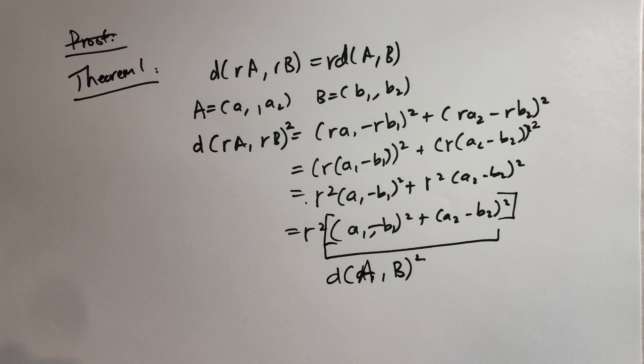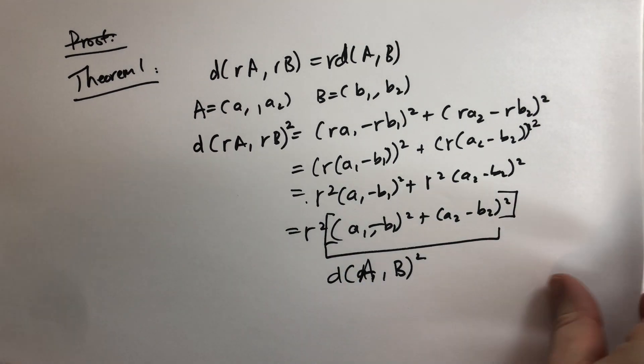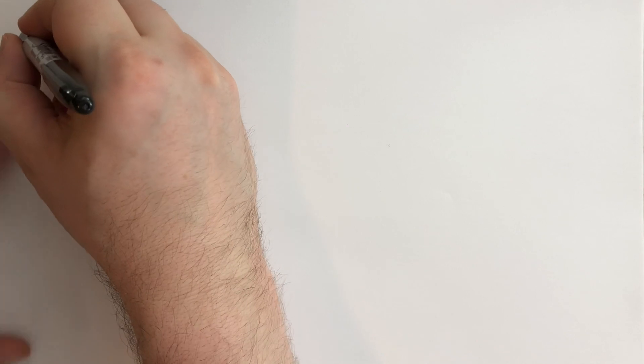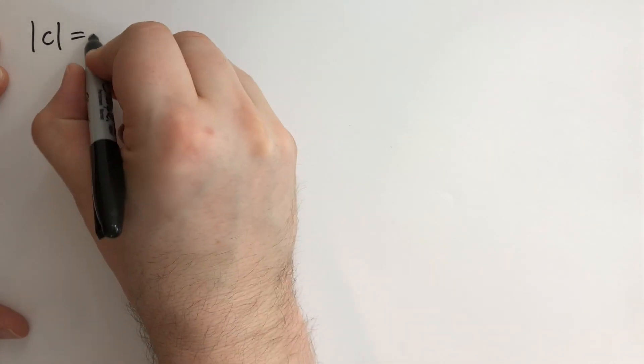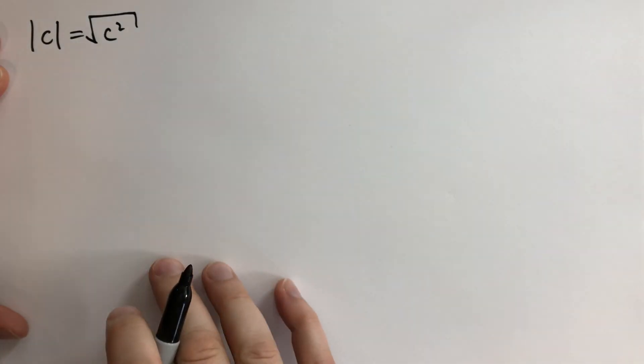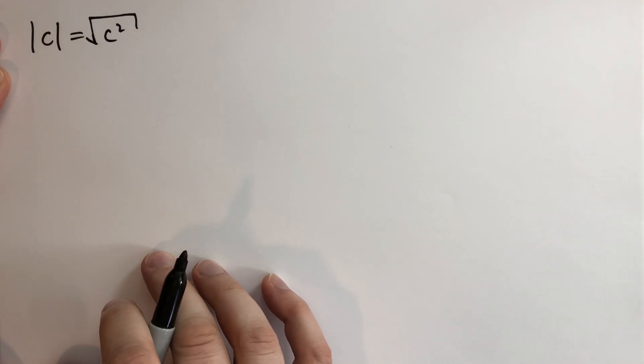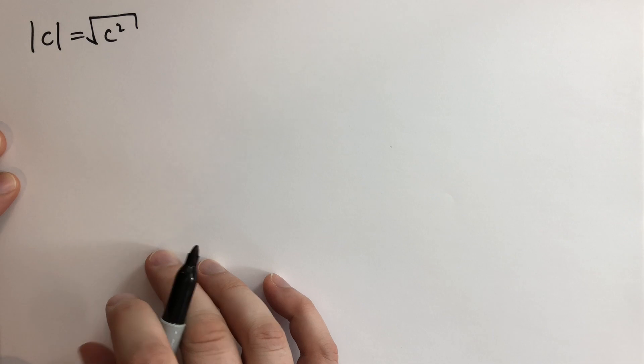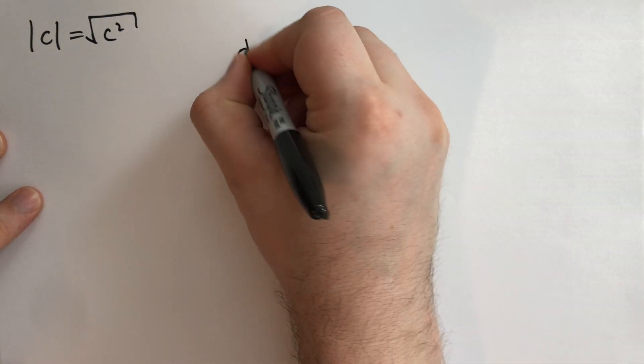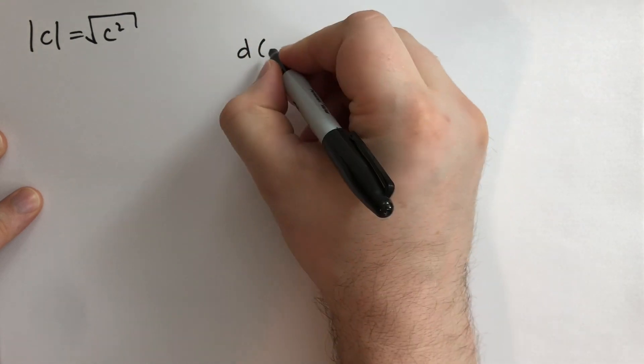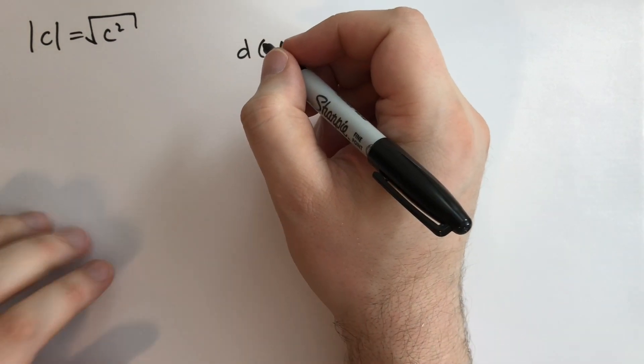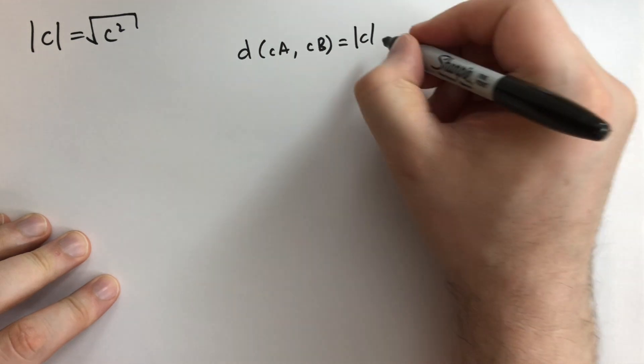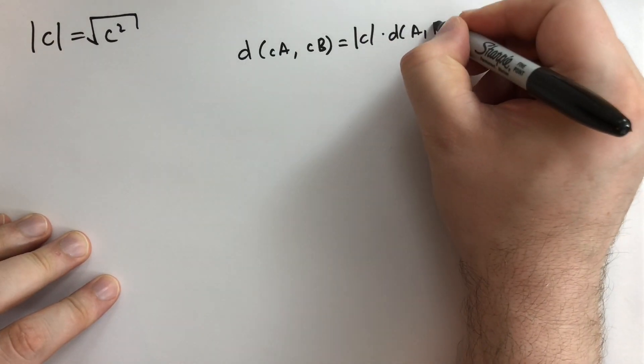What if we multiply by a negative number? So what if R is negative? So if we were to write out this, this is the absolute value of C. This is equal to the square root of C squared. It's a very simple formula that you can memorize.